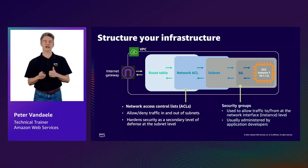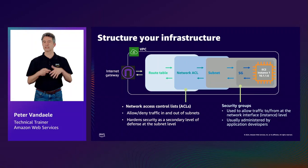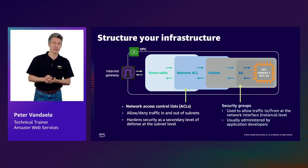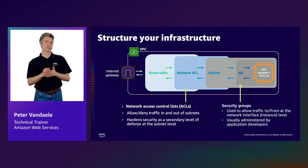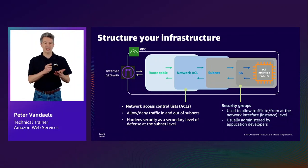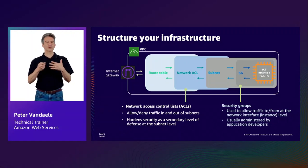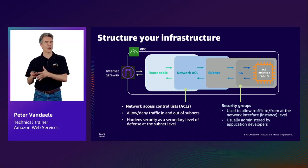First, we have the internet gateway, which acts as a doorway to connect the VPC to the outside world. This enables resources in your public subnets, such as EC2 instances, to connect to the internet if the resource has a public IP address. Then we have route tables, which define how traffic should flow.